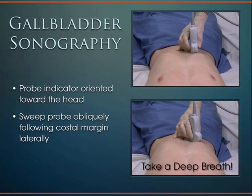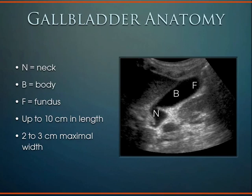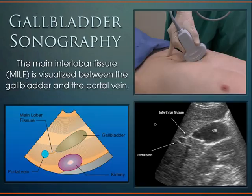Gallbladder scanning 101: use a curved array or phased array transducer with the indicator toward the patient's head, have the patient take a deep breath, and slide along the subcostal margin laterally. You should see the fundus, body, and neck of the gallbladder — up to 10 cm in length and 3 cm in width is normal. If multiple black structures appear and you're unsure which is the gallbladder, remember that the main interlobar fissure (MILF) connects the portal vein to the neck of the gallbladder.